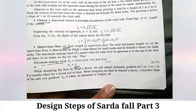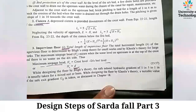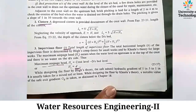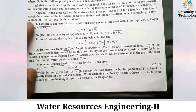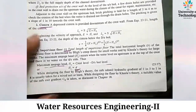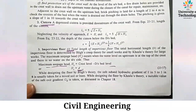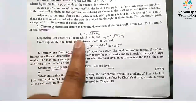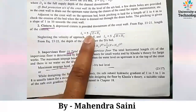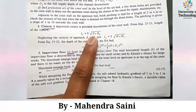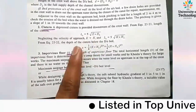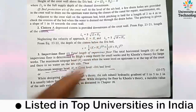Good morning students. Last time we discussed the design of Sarda Fall and various steps of its design. Now we move towards the next step: the design of the cistern system. The length of the cistern system is given by: length equals 5 times the square root of E multiplied by HL.